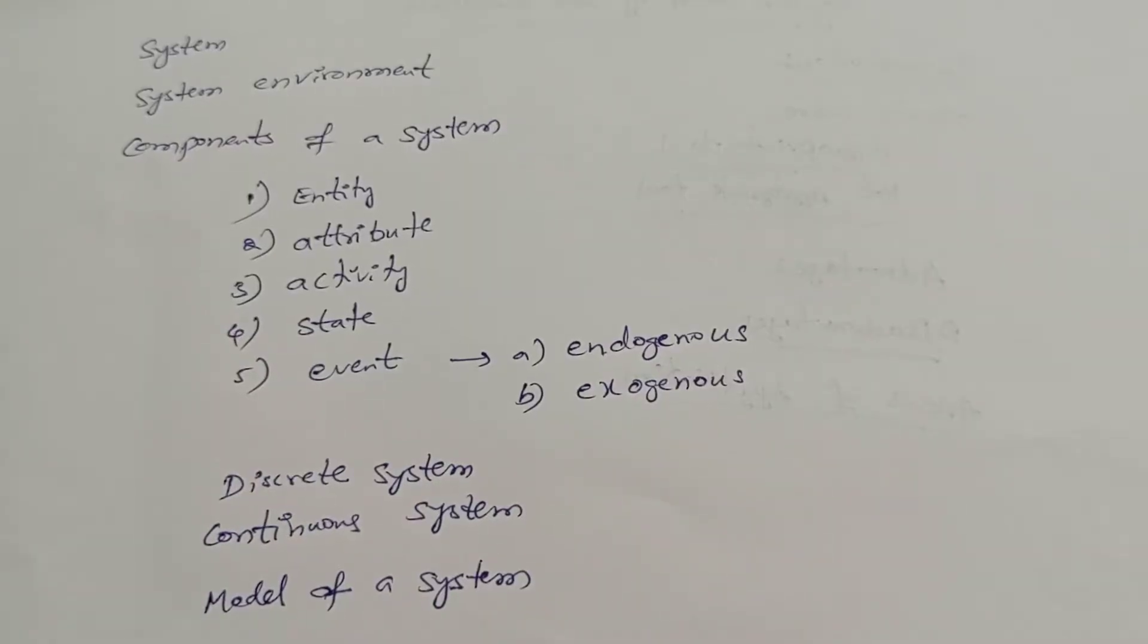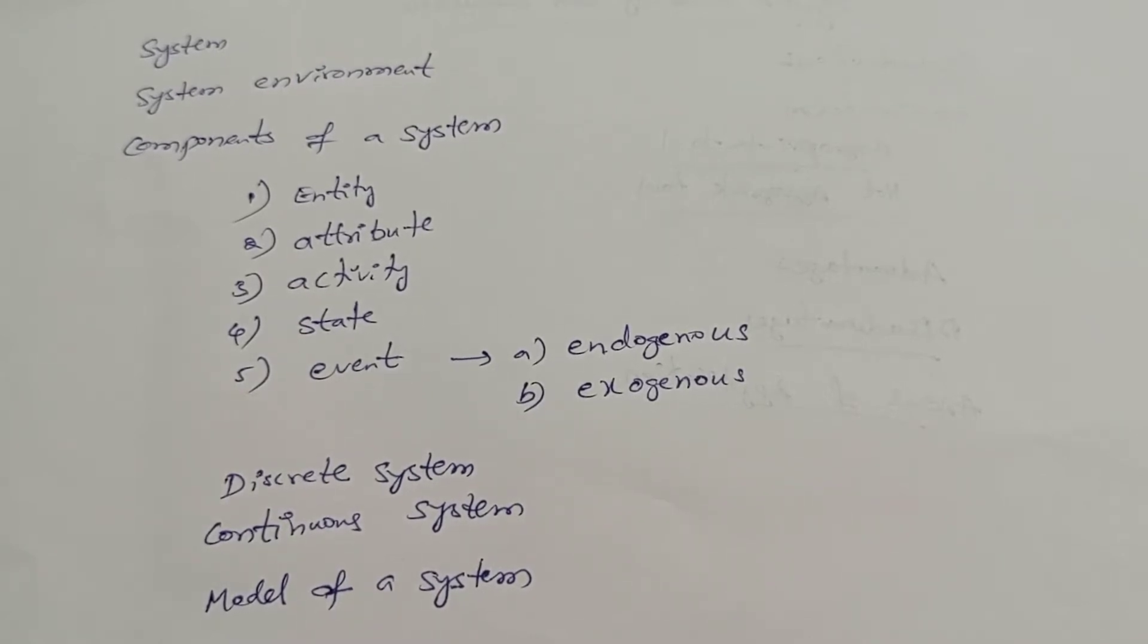What is an entity? Entity is an object of interest in the system. For example, take a two-wheeler. In that, one object, you take any one object, for example, headlight or a brake. That is nothing but an entity, which is an object of interest in a system.